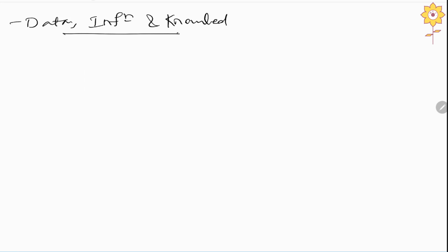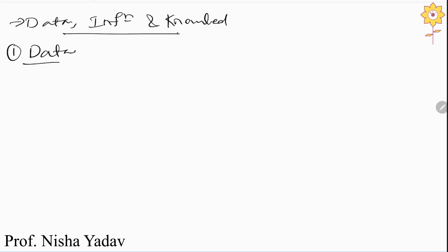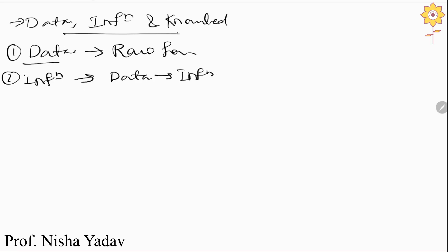Before understanding the concept, we will first understand the basic idea about data, information, and knowledge. Data is nothing but raw information available in a raw format. Information is generated when we apply some sort of processing on our data. Knowledge is simply utilizing that information in various formats.